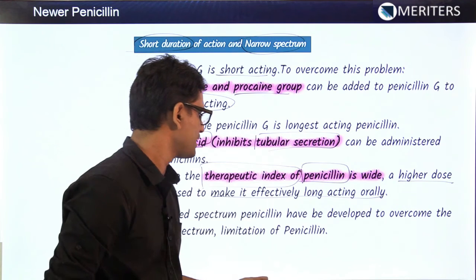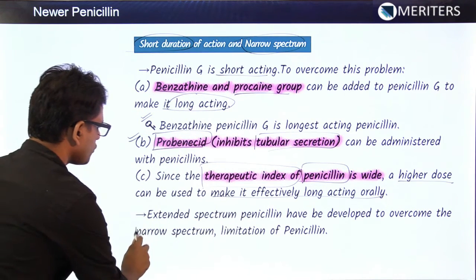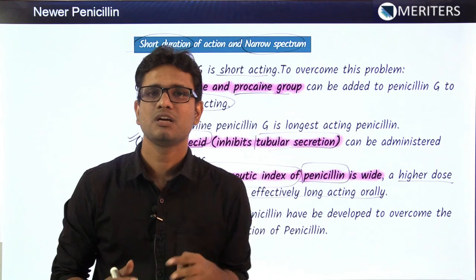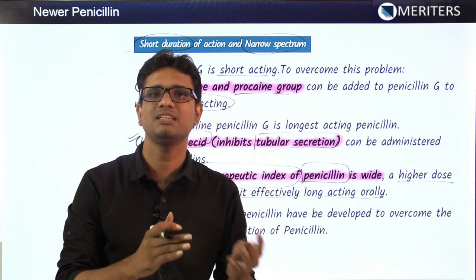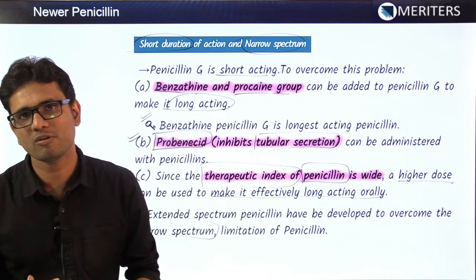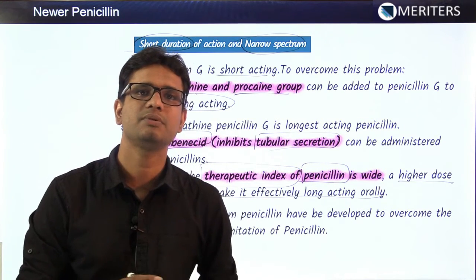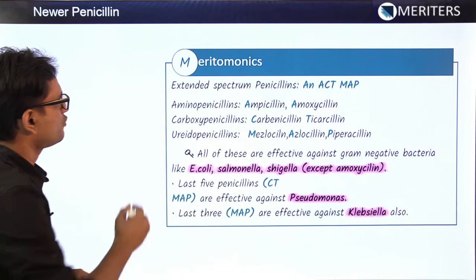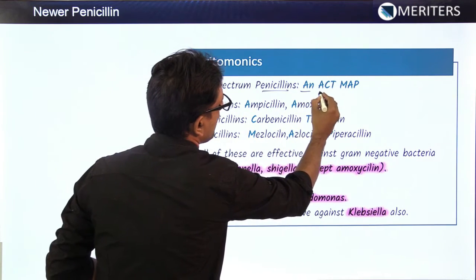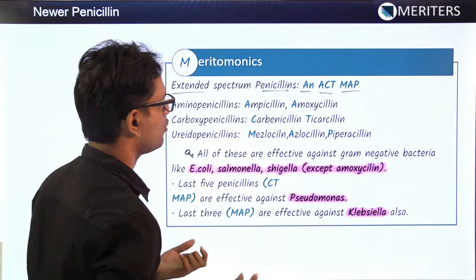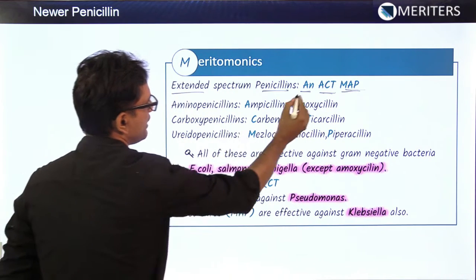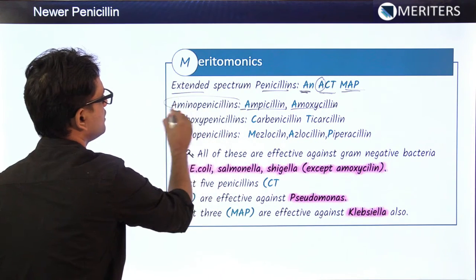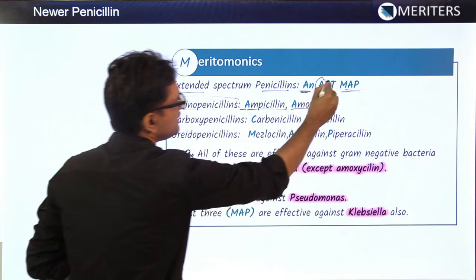Extended spectrum penicillins have been developed to overcome the narrow spectrum limitation of penicillin. These drugs affect not only gram-positive bacteria but gram-negative bacteria as well, including those that have developed resistance. To remember the extended spectrum penicillins, we use the mnemonic ACT MAP: A and A stand for ampicillin and amoxicillin, which come under aminopenicillins.